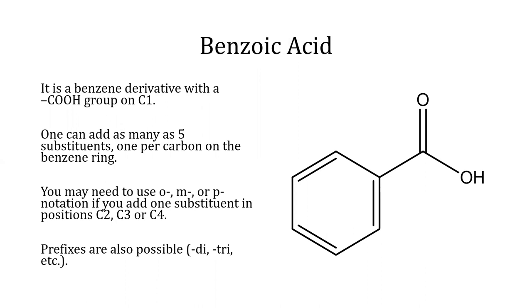Benzoic acid is a benzene derivative with a COOH group on C1. One can add as many as five substituents, one per carbon on the benzene ring. You may need to use ortho, meta, or para notation if you add one substituent in position C2, C3, or C4.